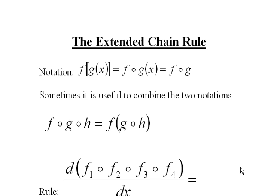The extended chain rule. We're going to look at some notation for composite functions here, and this is f of g of x. In other words, you take f and plug g of x in instead of x. Another way of writing that is f circle g of x, and a third way is just f circle g. Always this g is inside the function f.